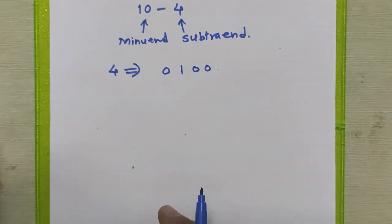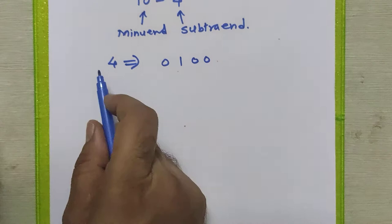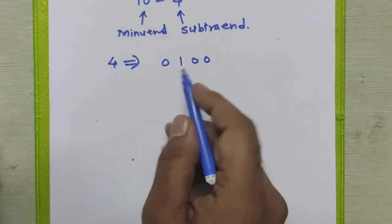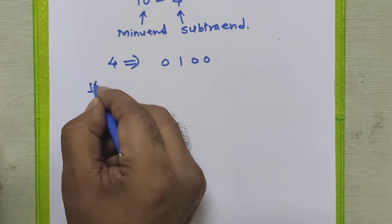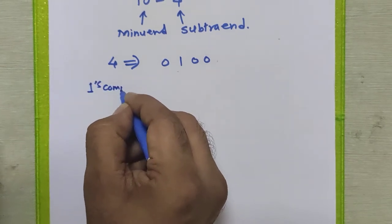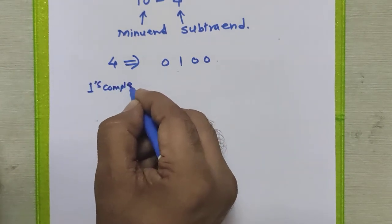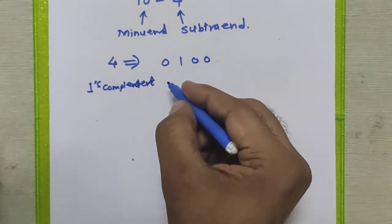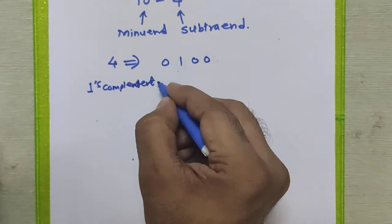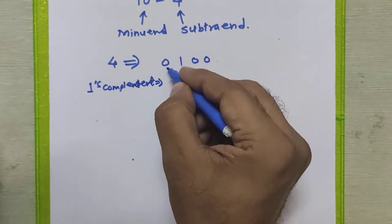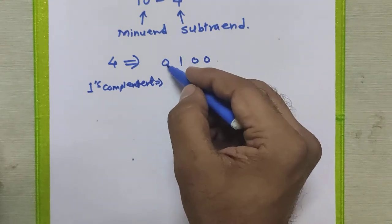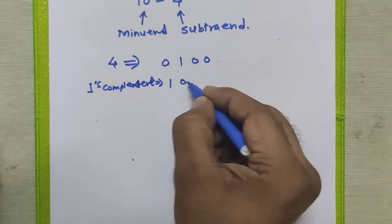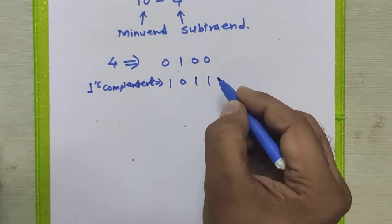Now we will find the two's complement of this number. To get the two's complement, we first have to find the one's complement. For the one's complement, we just replace each zero with one and each one with zero, so 0 1 0 0 becomes 1 0 1 1.